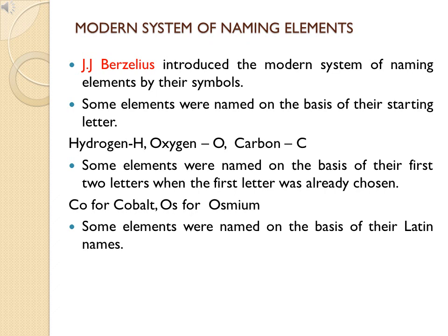Rule two: some elements use their first two letters when the first letter is already taken. For example, C is already used for carbon, so cobalt uses Co. Similarly, O is taken by oxygen, so osmium uses Os. When writing two-letter symbols, the first letter must be capital and the second must be in lowercase — so cobalt is Co, osmium is Os, sodium is Na.